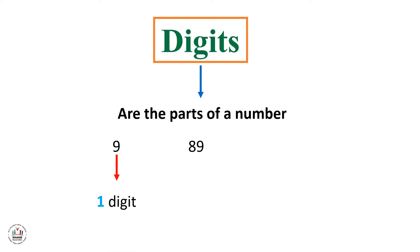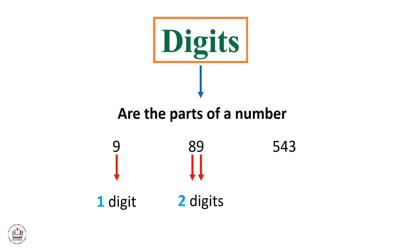Another example: here we have 89. Here we have 9 ones and 8 tens, so here we have 2 digits. And the last example, 543. So here we have 1, 2, 3 — 3 digits.